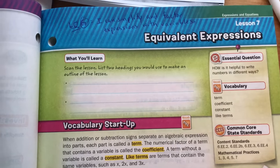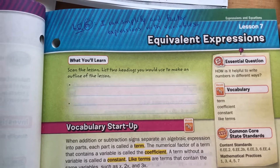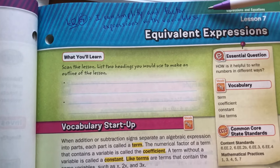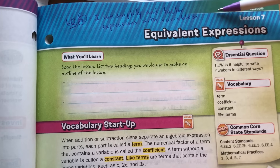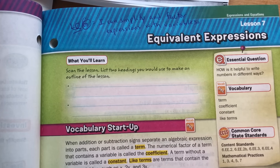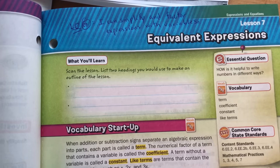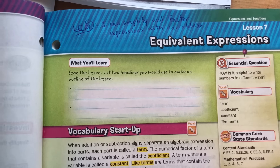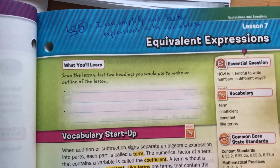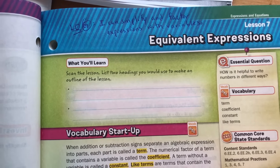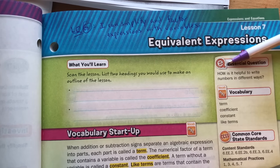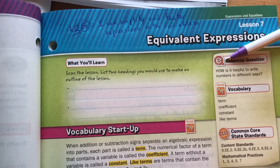We're at the last lesson for Chapter 6. Learning Objective G says: I can simplify and factor expressions with variables. We're going to take everything we learned and mix it together, which means we're taking the distributive property and also using the commutative and the associative property too — everything from this chapter all wrapped up into one.